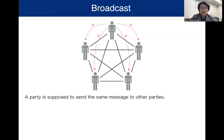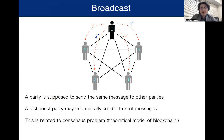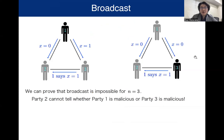Another important problem is the problem of broadcast. In this problem, a sender is supposed to send the same message to other parties. However, if the sender is dishonest, the sender may send different messages to the other parties to confuse the network. This problem is related to the consensus problem, which is the theoretical model of blockchain. It is known that broadcast is possible if and only if the number of malicious parties is less than one-third of the number of parties.